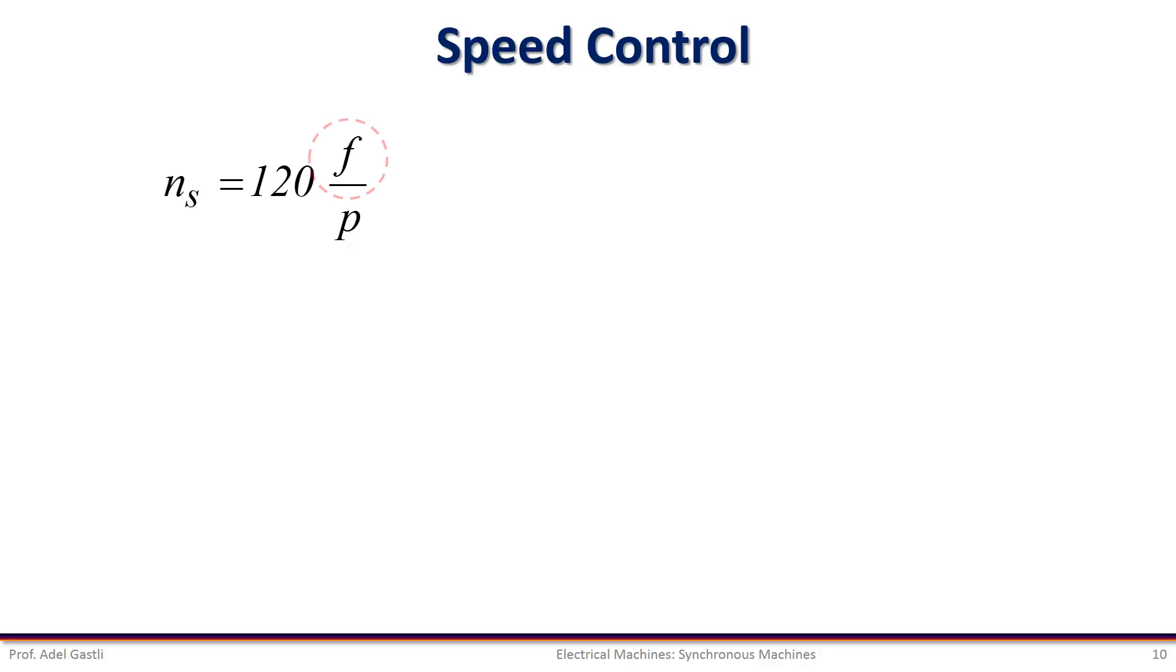Now, let's see how we can control the speed of the synchronous machine. The control of the speed of a synchronous motor can be achieved by changing the frequency of its power supply. By increasing the frequency, the speed will increase, and by decreasing the frequency, the speed will decrease.